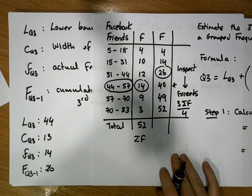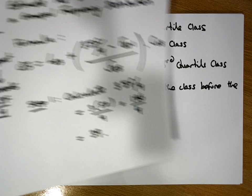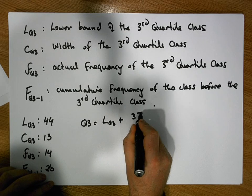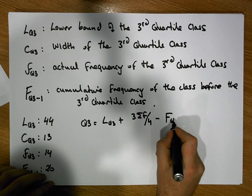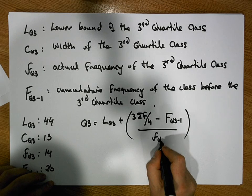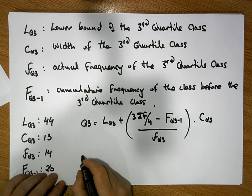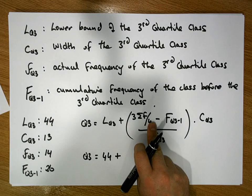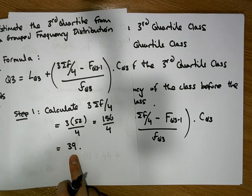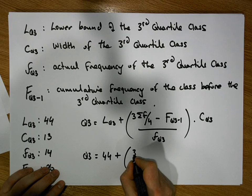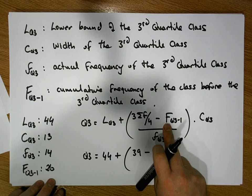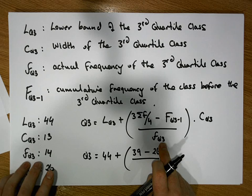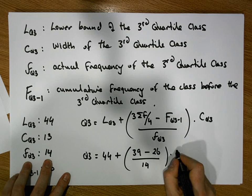Now that we have all the values, we apply the formula: Q3 = L_q3 + [(3Σf/4 − F_(q3−1)) / f_q3] × c_q3. Substituting in: Q3 = 44 + [(39 − 26) / 14] × 13. Here, 39 is our key value, 26 is the cumulative frequency of the class before the quartile class, 14 is the actual frequency of the quartile class, and 13 is the class width.